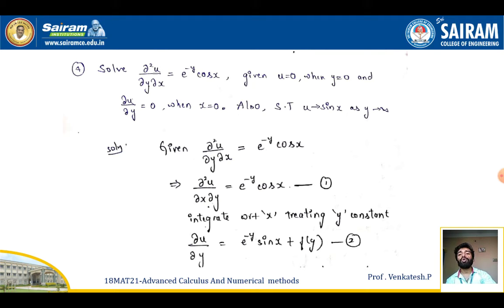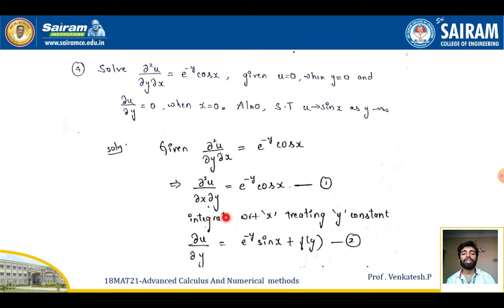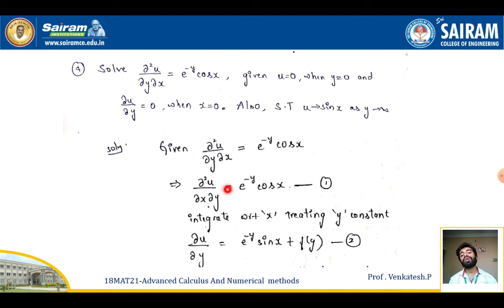One more example: solve ∂²u/∂y∂x = e^(−y)cosx, given u = 0 when y = 0 and ∂u/∂y = 0 when x = 0. Also show that u tends to sinx as y tends to infinity. To use the condition involving ∂u/∂y, I convert ∂²u/∂y∂x to ∂²u/∂x∂y and integrate with respect to x.